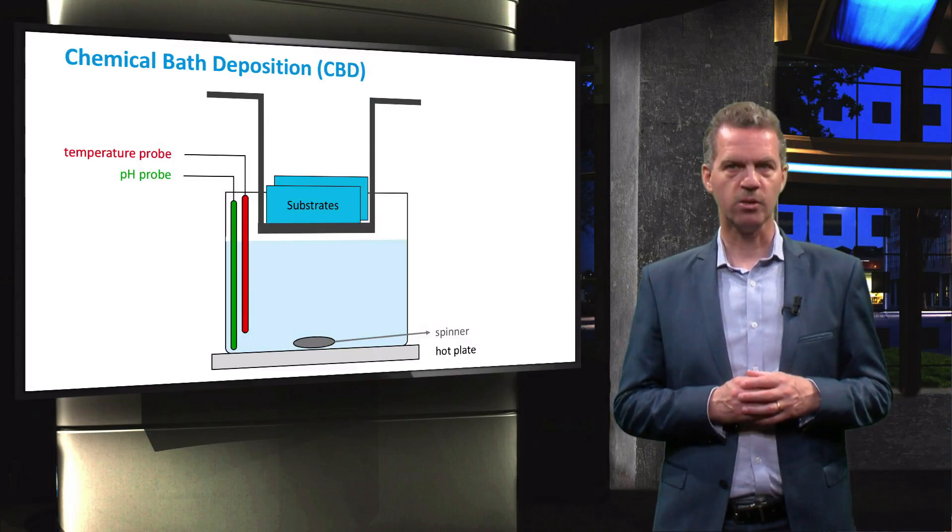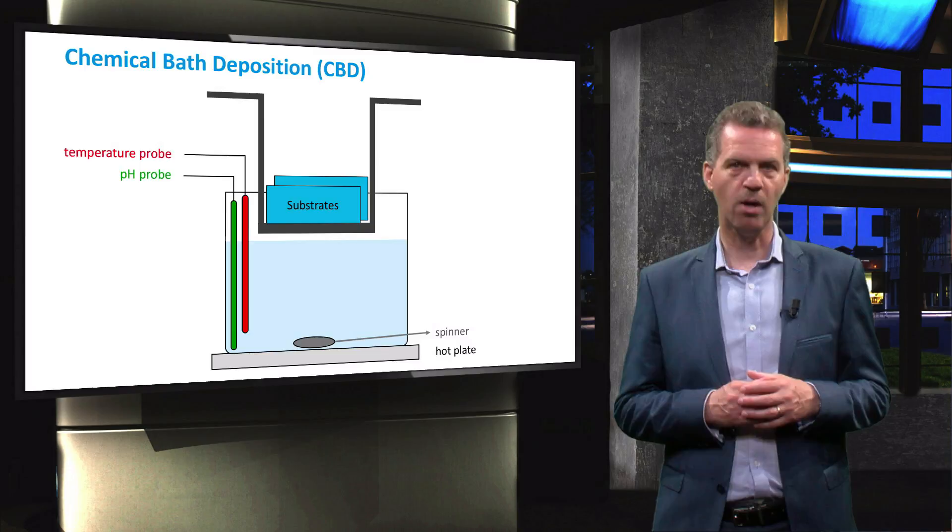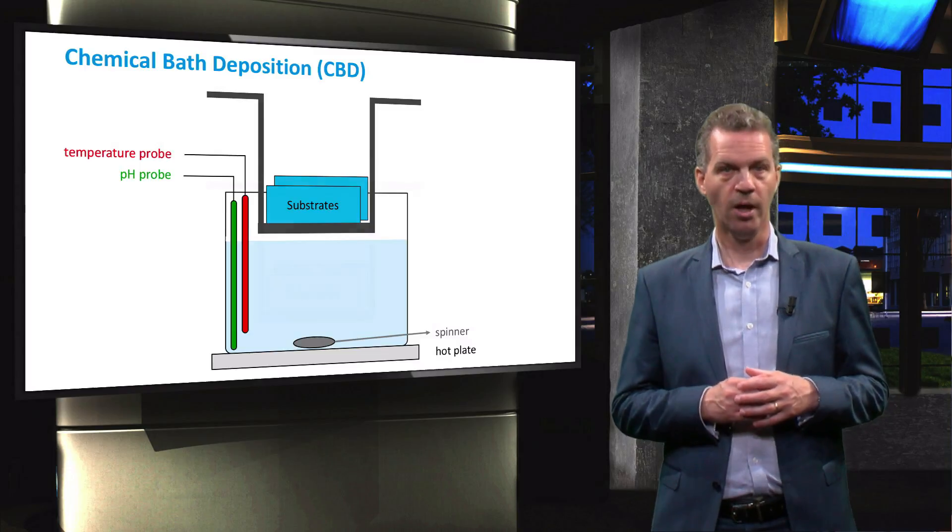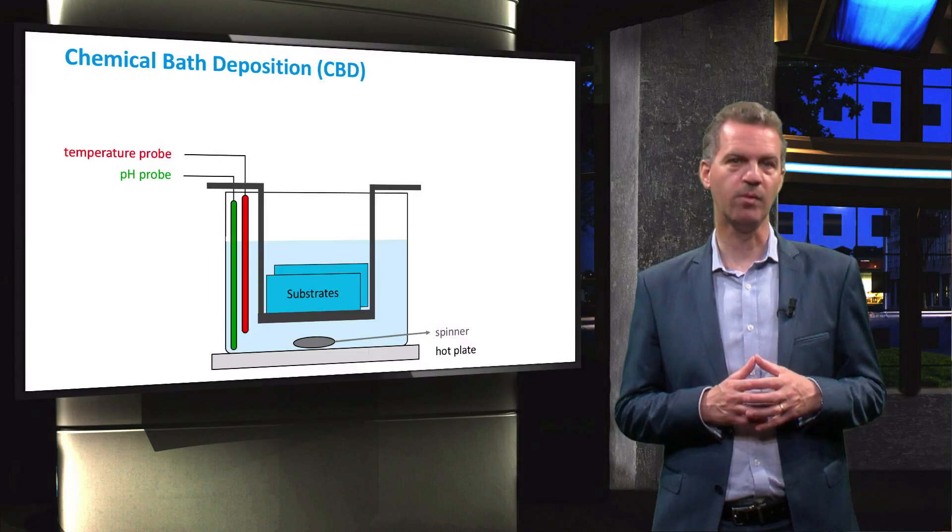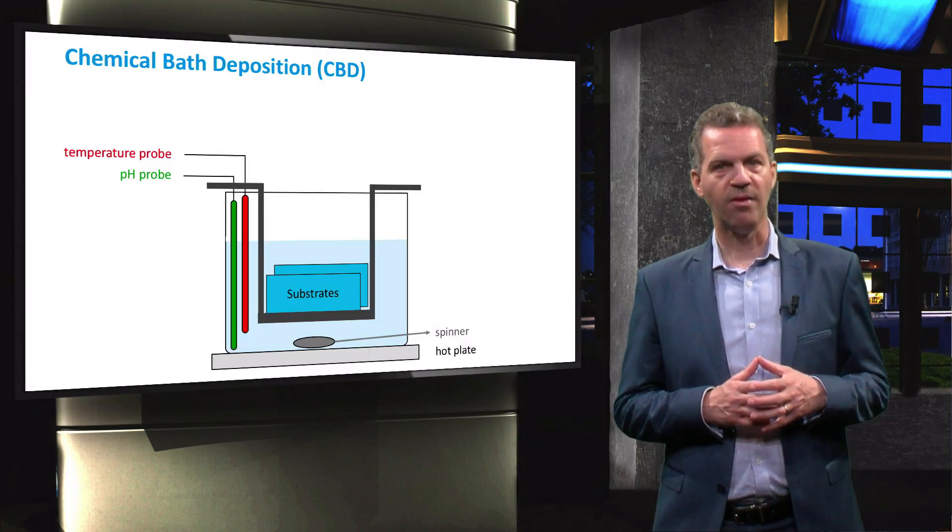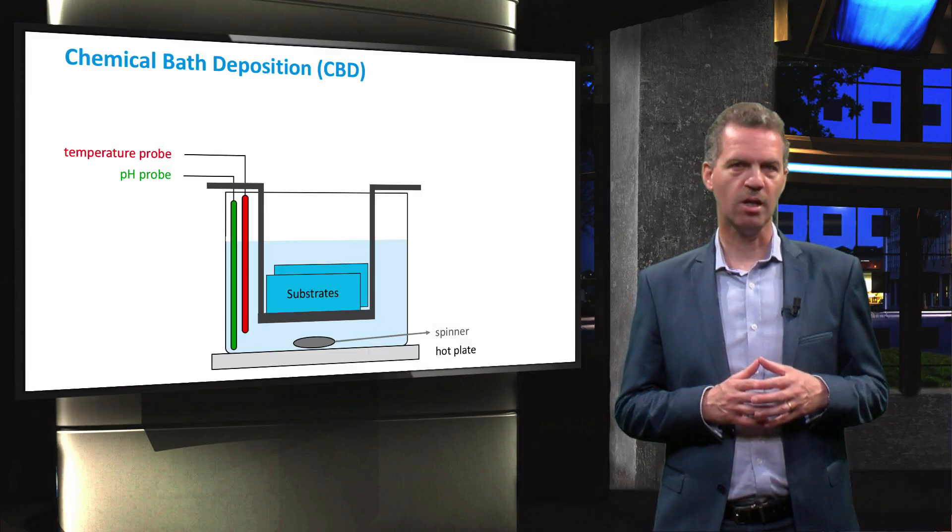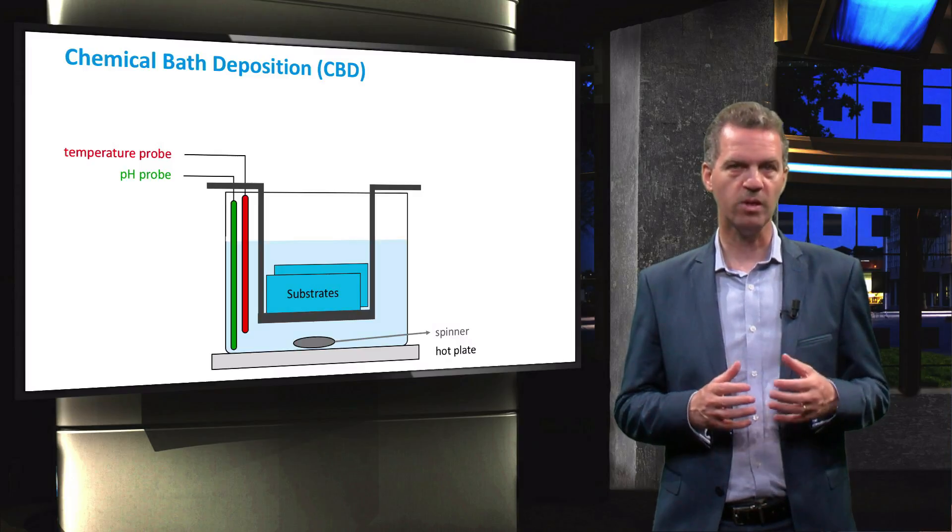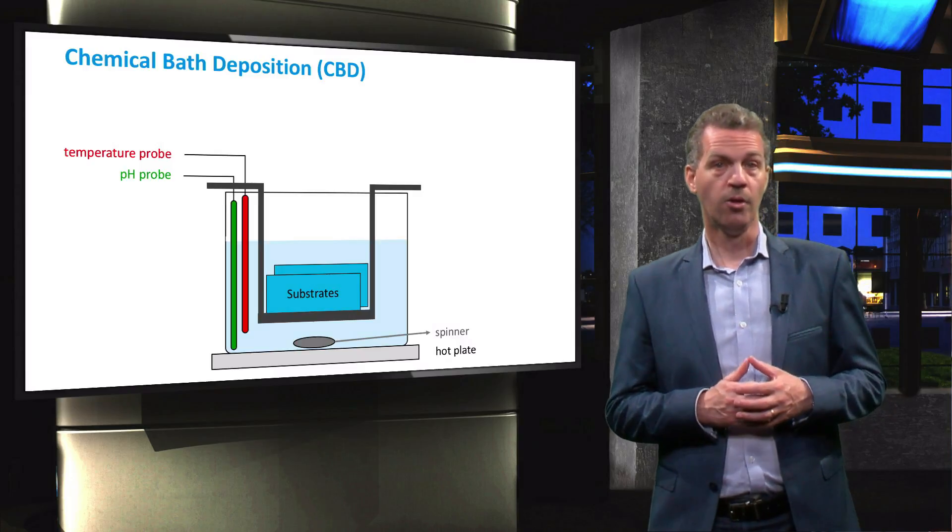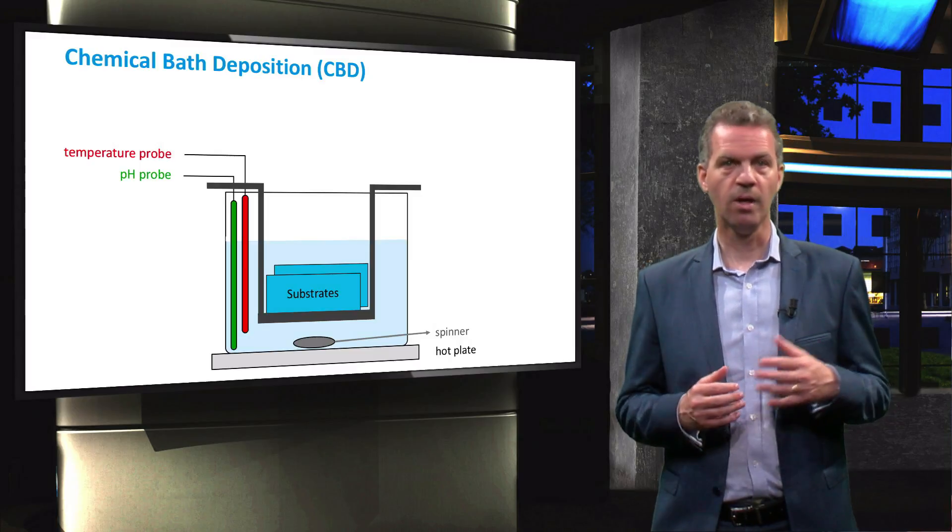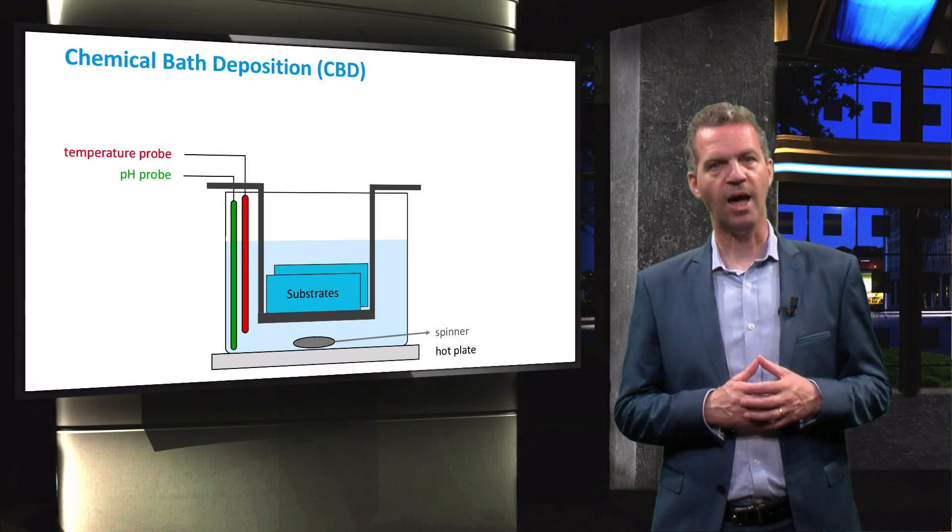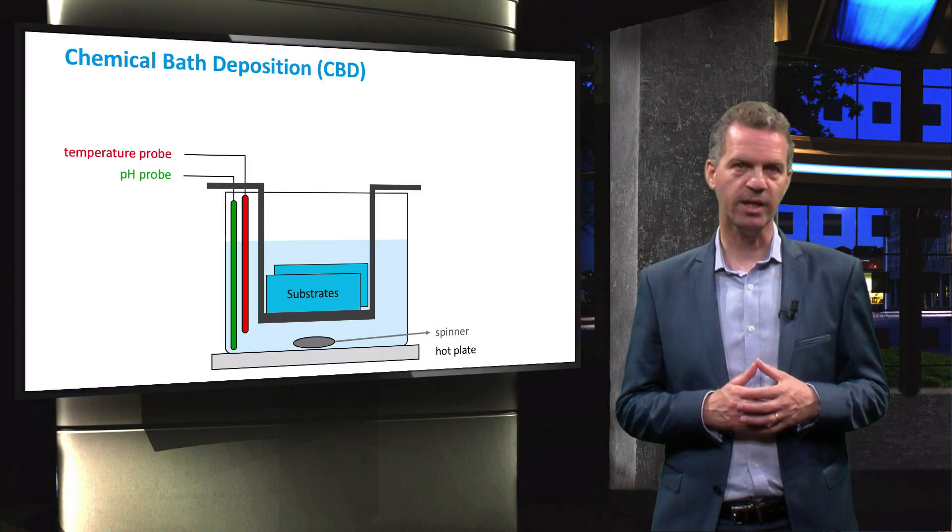Here we see an illustration of a lab-scale chemical bath deposition setup. The substrate is submerged in a precursor fluid containing cadmium and sulfur and a thin layer of cadmium sulfide will then deposit on the substrate from the solution. The growth rate depends on the solution temperature, composition, the deposition duration and the topographical and chemical nature of the substrate.